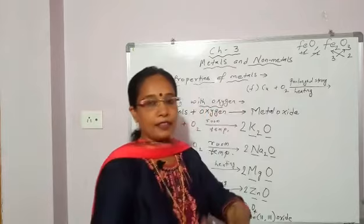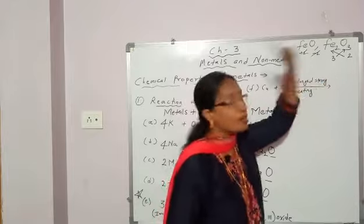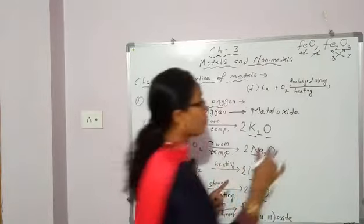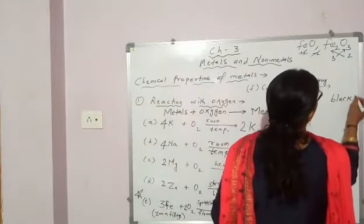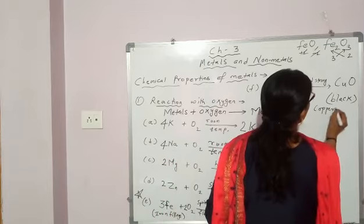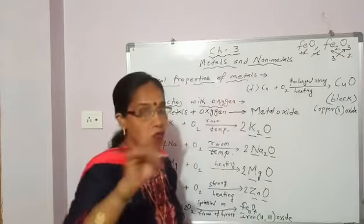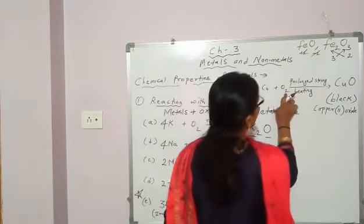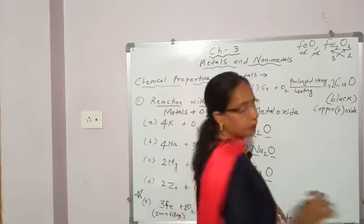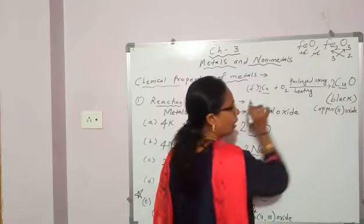Next, copper. Still the reactivity goes on decreasing. Copper reacts with oxygen on prolonged strong heating — for a long time if you heat it strongly. Then it will react with oxygen, and what is formed? A black substance — copper(II) oxide, CuO. Copper has two valencies: 1 and 2, and valency 2 is used here. Balancing: 2 oxygen on one side, 1 on the other — add 2 in front, which applies to copper as well. Now the equation is balanced.